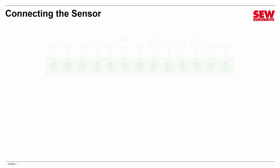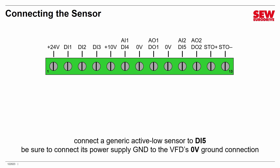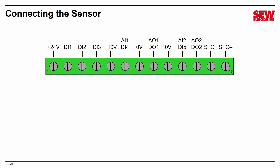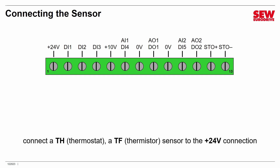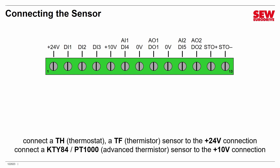To connect any generic active low sensor, connect it to digital input 5 and connect its power supply ground to the VFD's zero-volt ground so everything is at the same reference potential. For a TH or TF temperature sensor, you can use the built-in 24-volt supply on the VFD — connect the sensor between the 24-volt supply and digital input 5. Your sensor needs a 2.5k ohm threshold to work properly. Alternatively, for an advanced thermistor like a KTY84 or PT1000, connect it between the 10-volt power supply and digital input 5.